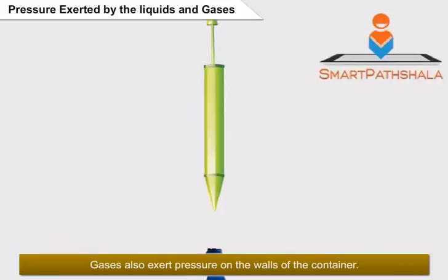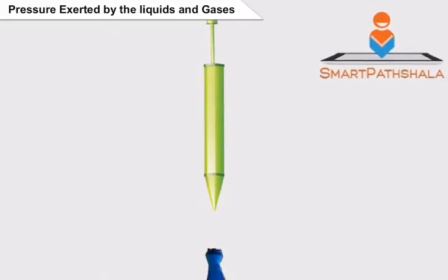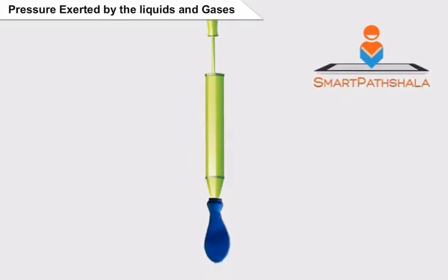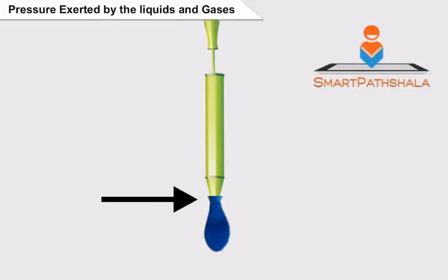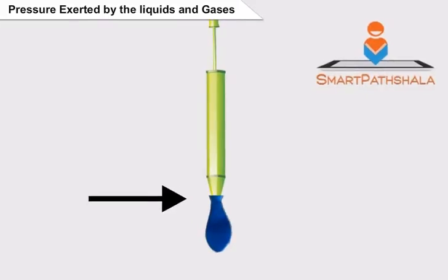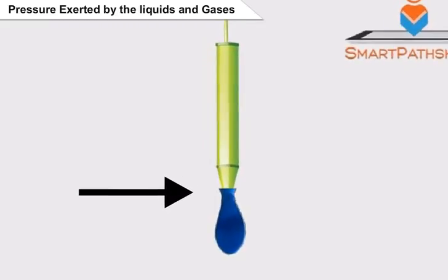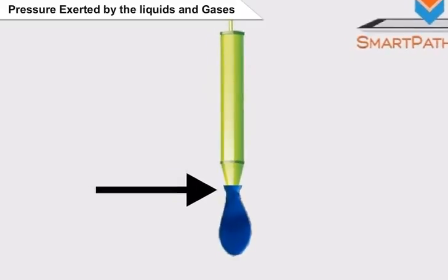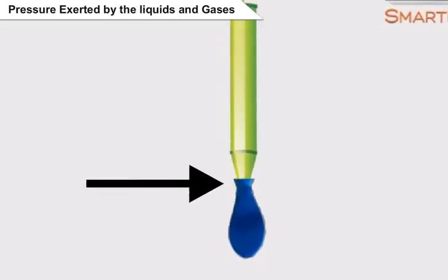Gases also exert pressure on the walls of the container. We understand it better with an activity. Take a balloon and inflate air in it. We generally tie the mouth to avoid the escape of gas from it. If we do not tie the mouth, the air will escape from the balloon. We cannot inflate a rubber balloon with holes as the air escapes from the holes. Thus, we can conclude that gases also exert pressure on the walls of the container.